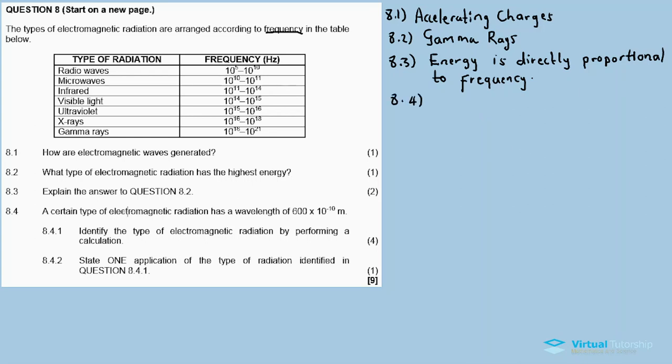8.4: A certain type of electromagnetic radiation has a wavelength of 600 times 10 to exponent minus 10 meters. 8.4.1: Identify the type of electromagnetic radiation by performing a calculation. In other words, I need to calculate the frequency for this wavelength using the formula for the speed of light.